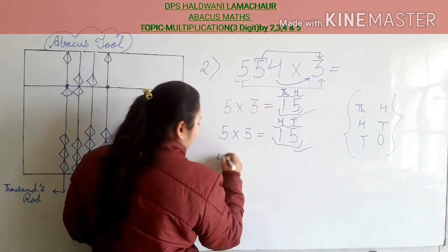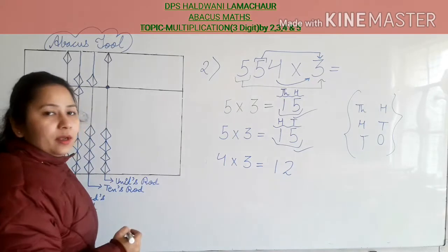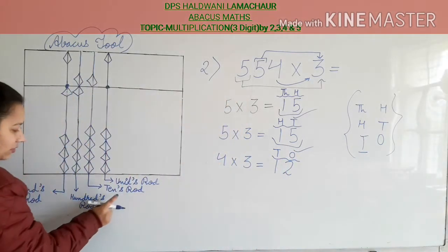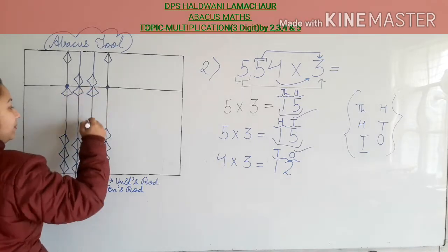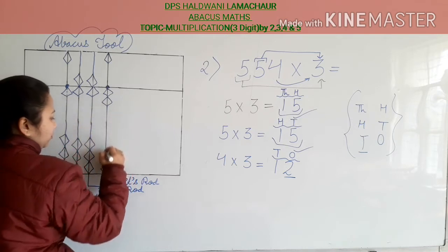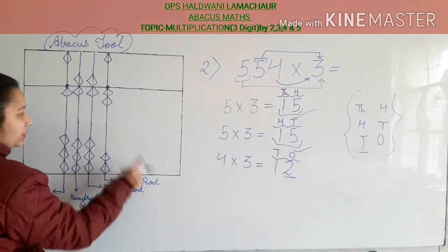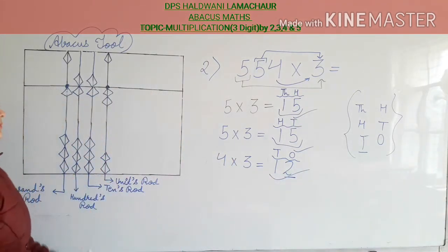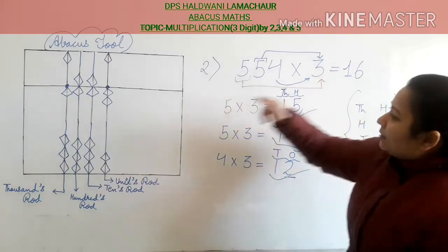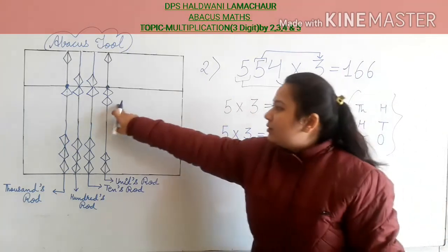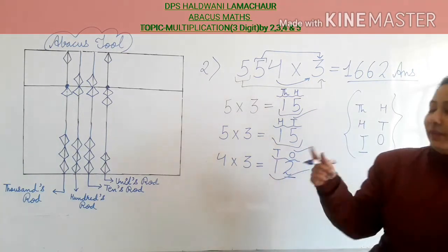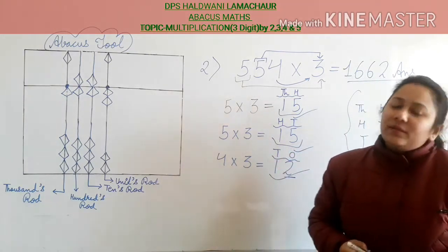Now the last digit: multiply 4 with 3, that is 12. Place 1 in tens rod and 2 in units rod. And your answer is 1662. You can do it very quickly with the help of the Abacus. Now we will move to the third sum: multiplication with 4.